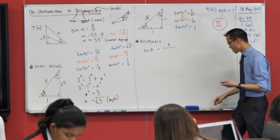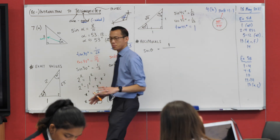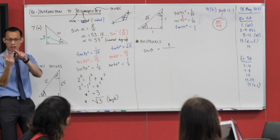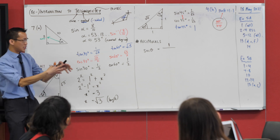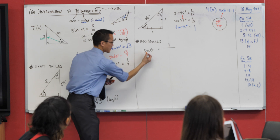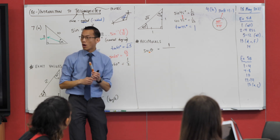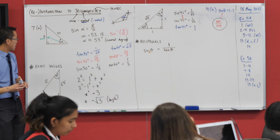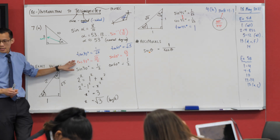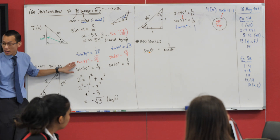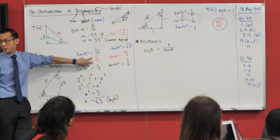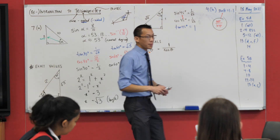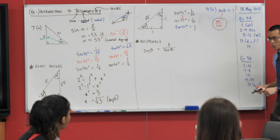Sec θ is the reciprocal of one of the ratios. Here's a little trick: look at the third letter of 'sec' — it's a C, so sec is the reciprocal of cosine. For instance, cos 30 = √3/2, so sec 30 = 2/√3. There's nothing crazy about it — it just means take the reciprocal. I wish there were a deeper reason for the memory trick, but it's completely coincidental — I'll take it anyway.